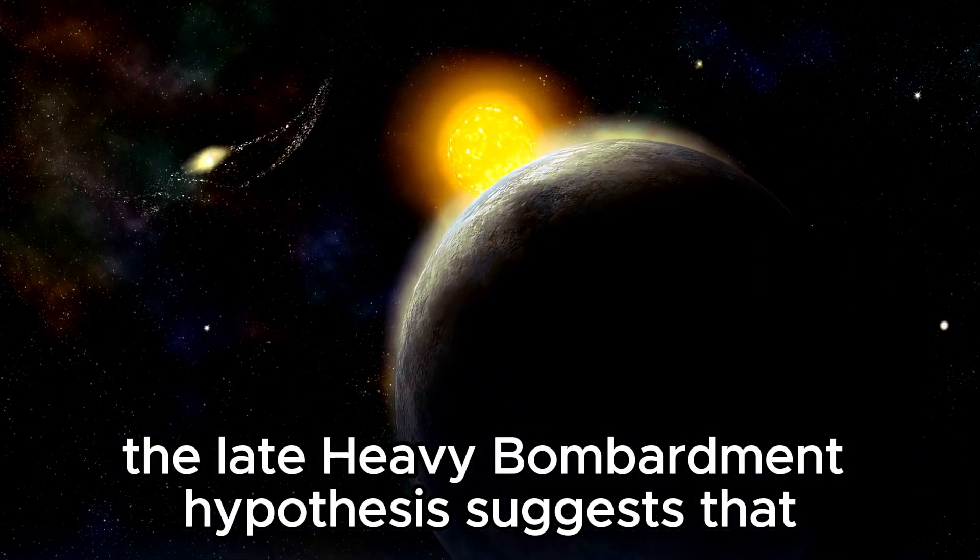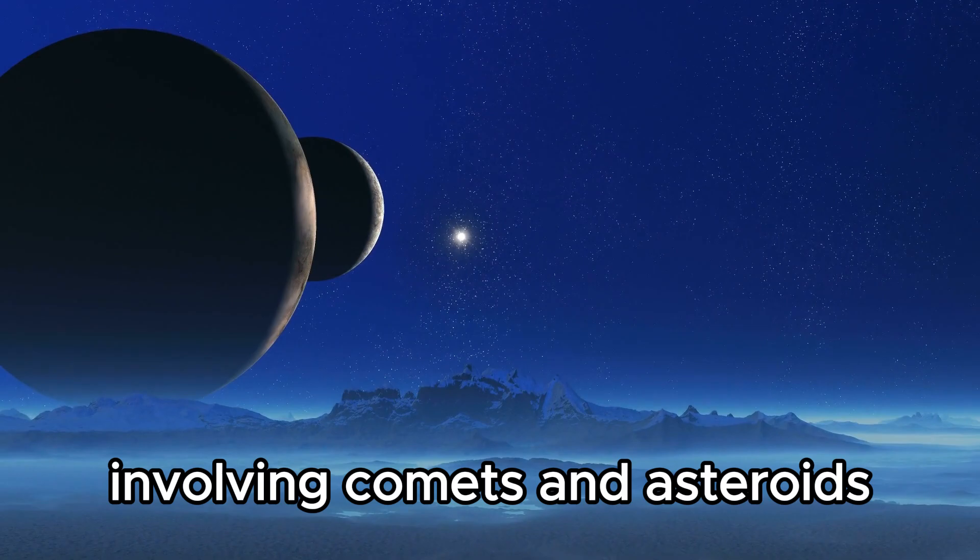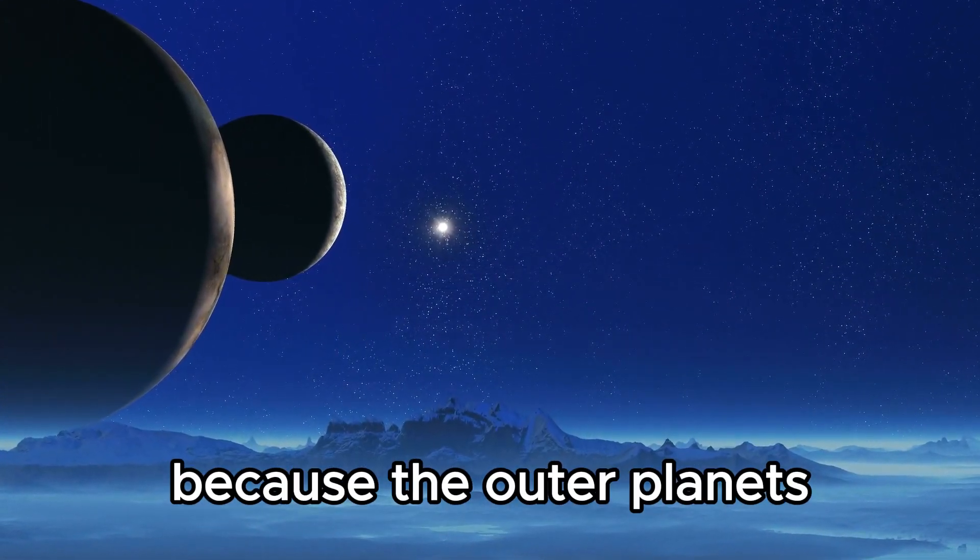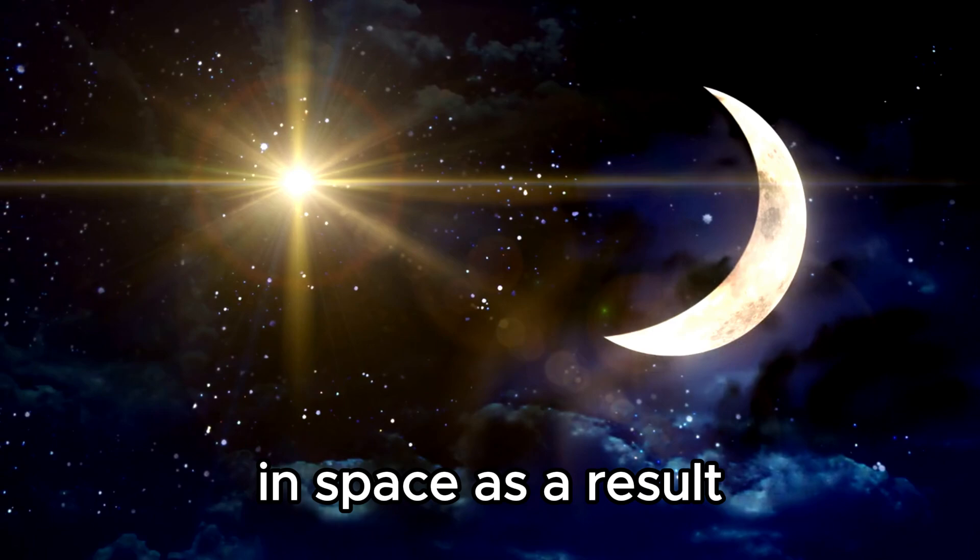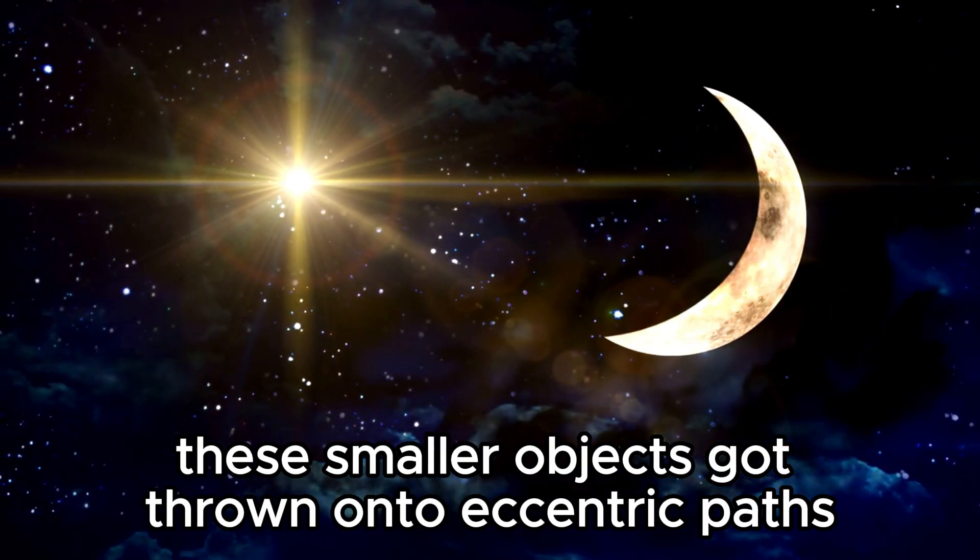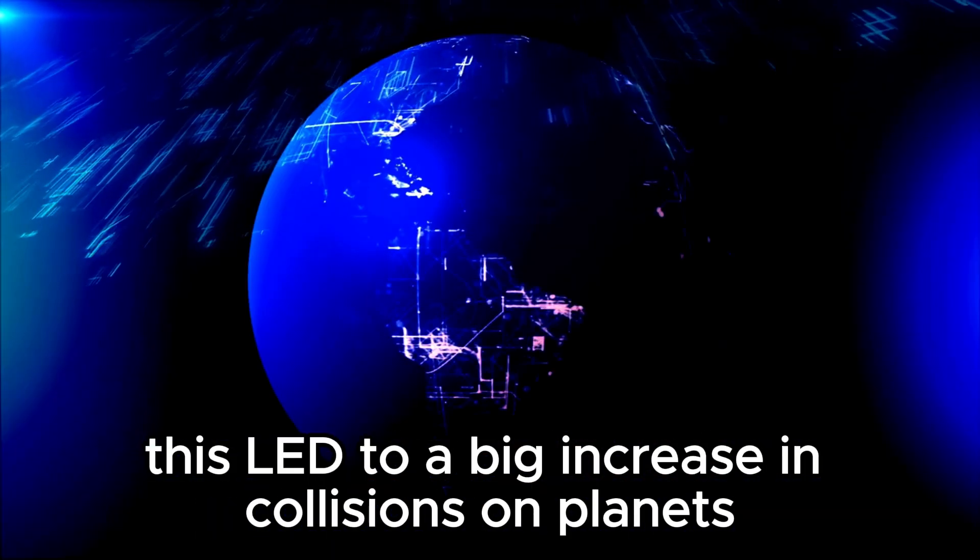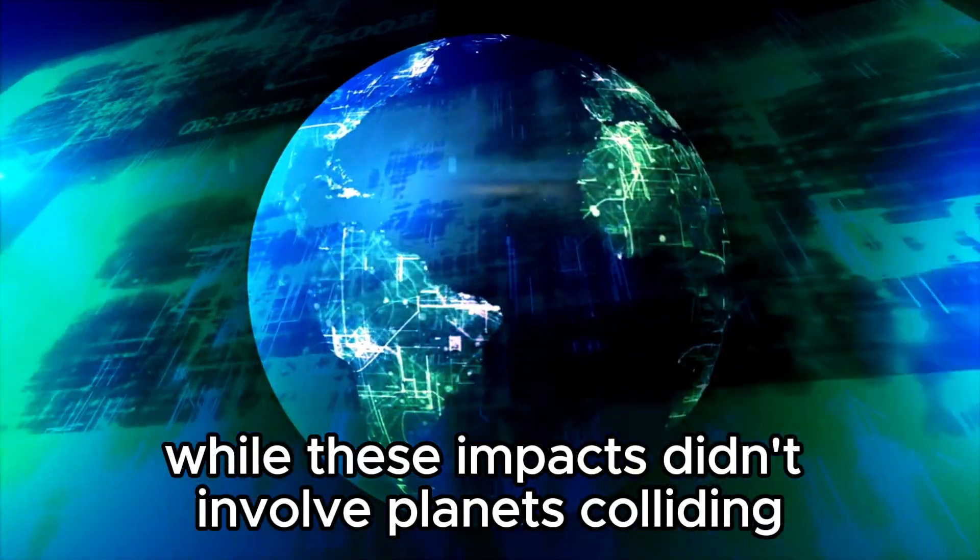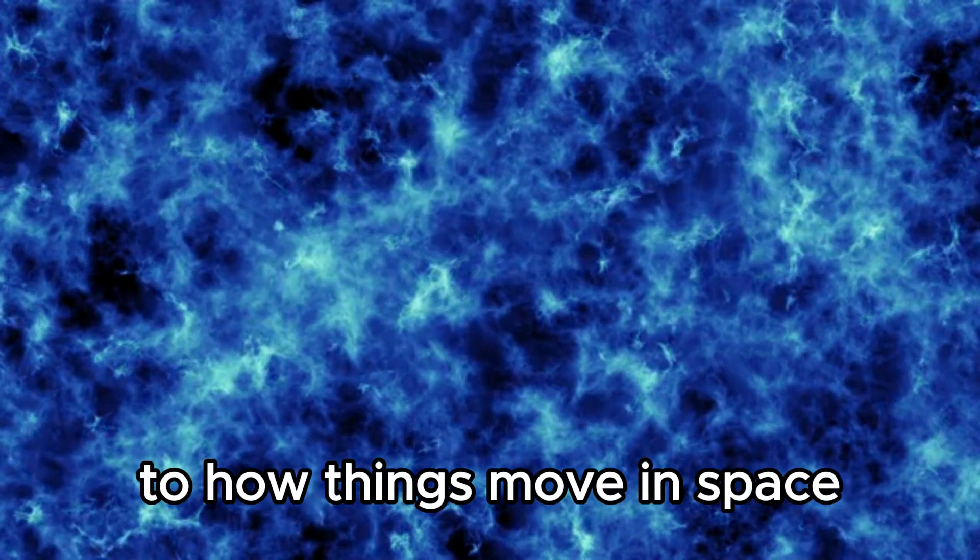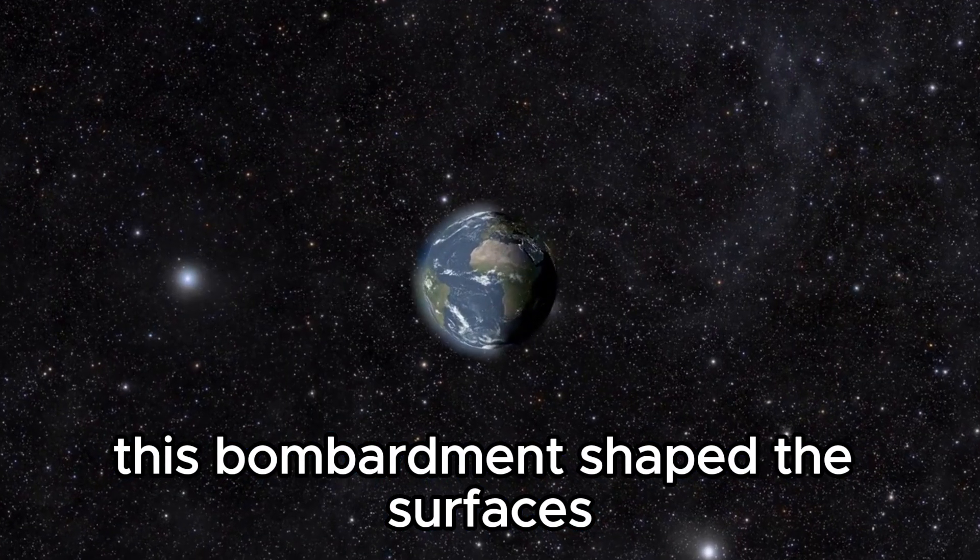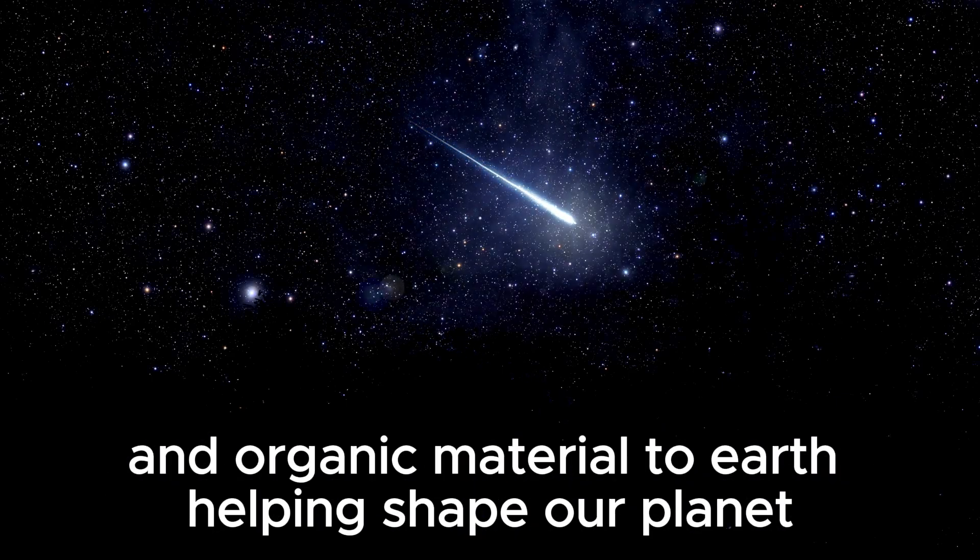The late heavy bombardment hypothesis suggests that around four billion years ago, there was a period of increased collisions involving comets and asteroids. This bombardment is believed to have occurred because the outer planets like Jupiter and Saturn were moving around a lot, which disturbed the paths of lots of smaller objects in space. As a result, these smaller objects got thrown onto eccentric paths, many ending up in the inner part of our solar system. This led to a big increase in collisions on planets like Earth. While these impacts didn't involve planets colliding directly, they demonstrated that gravity can make big changes to how things move in space. This bombardment shaped the surfaces and histories of planets in our solar system. It could have even brought water and organic material to Earth, helping shape our planet.